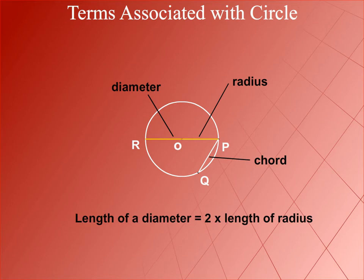The diameter is twice the length of the radius because the line segments RO and OP are equal. Remember you can draw countless numbers of radii, diameters, and chords of a circle. But the diameter is the longest chord of a circle.